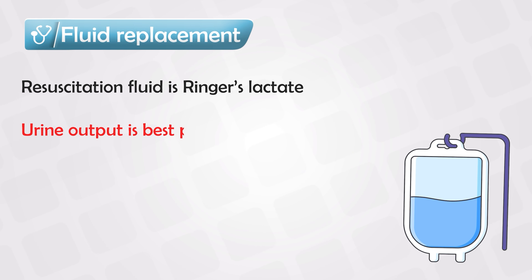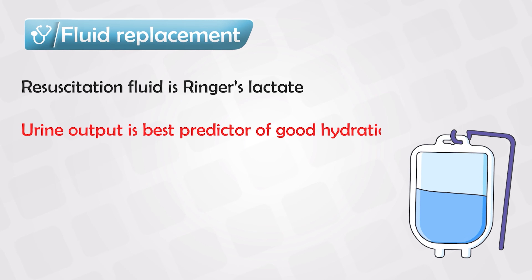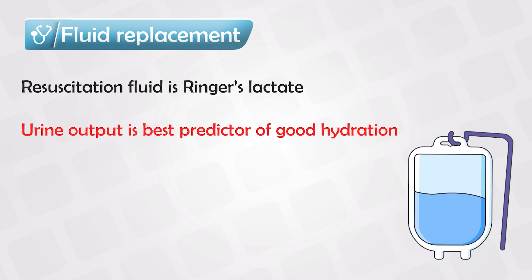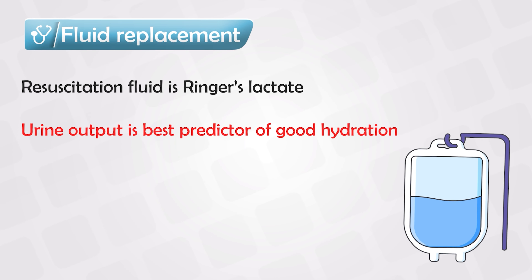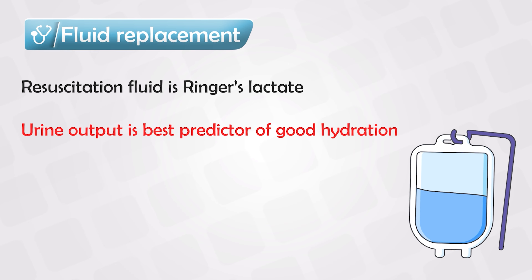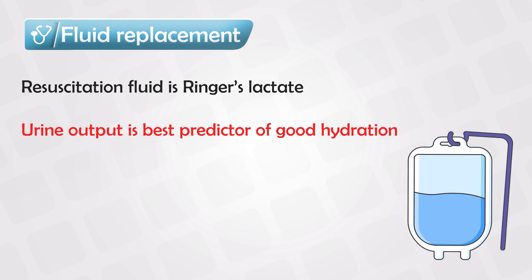The best predictive method for good hydration is urine output, so before starting rehydration, insert a Foley catheter.